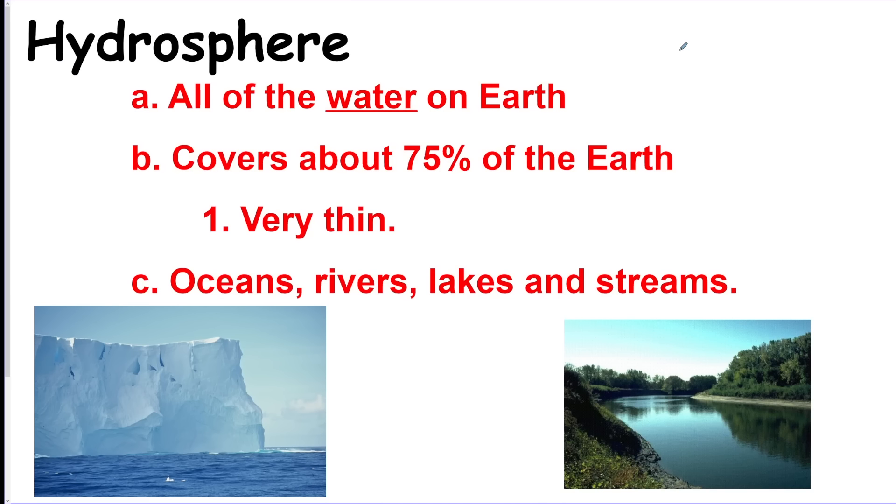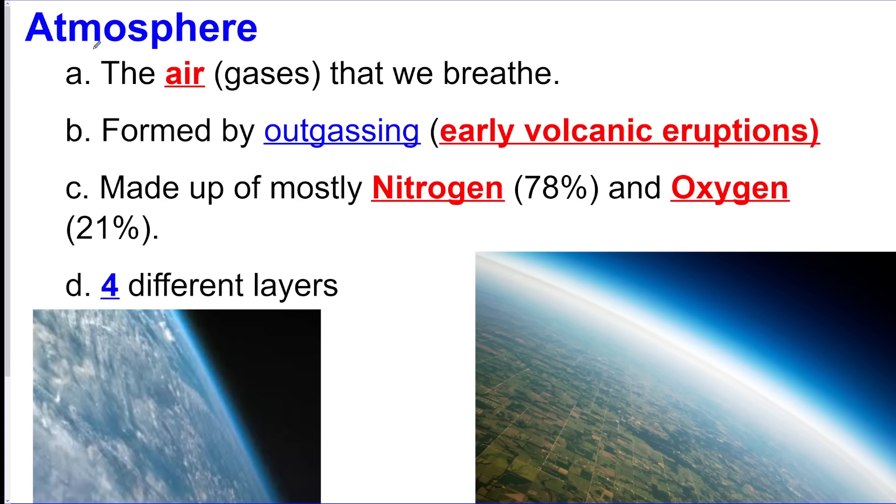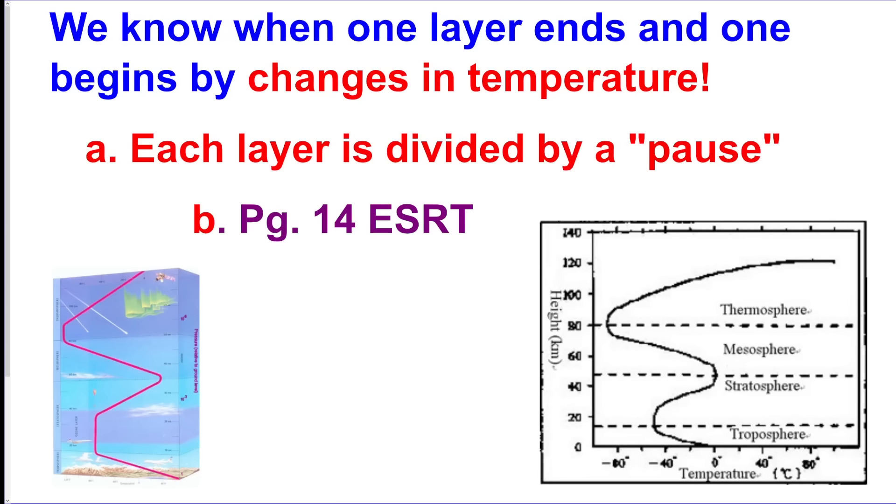And we're on to the hydrosphere, which is the water. This is a very thin layer, so compared to the whole Earth, the ocean is barely anything. Atmosphere, the air or gases that we breathe. It was formed by volcanic eruptions as the Earth was formed. That's called outgassing. And it's mostly made up of nitrogen, 78 percent, and then a little bit of oxygen and some other trace materials.